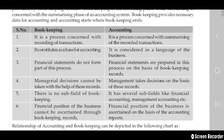Bookkeeping provides necessary data for accounting, and accounting starts where bookkeeping ends. Simply: bookkeeping is a process concerned with recording of transactions, but accounting is a process of summarizing recorded transactions. Financial statements are not prepared in bookkeeping but in accounting, financial statements are prepared on the basis of bookkeeping records. Managerial decisions cannot be taken with the help of bookkeeping records, but management decisions can be taken by the help of accounting. There are no sub-fields of bookkeeping, but there are several sub-fields in accounting — financial accounting, management accounting. The financial position of the business cannot be determined by bookkeeping but can be determined by accounting.